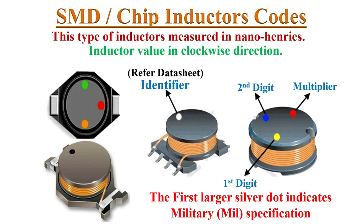SMD inductors are very small in size, so colored dots may be used instead of bands to specify their inductance value. This type of inductor's value is measured in nano-Henrys. There are generally three dots read in clockwise direction. If the first dot is a larger silver dot, that indicates military specification.